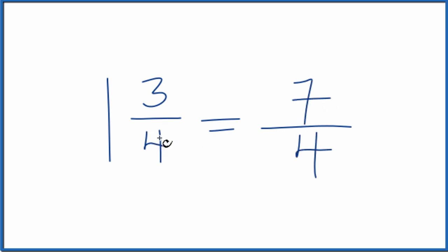So the mixed number 1 and 3 fourths equals the improper fraction 7 fourths.